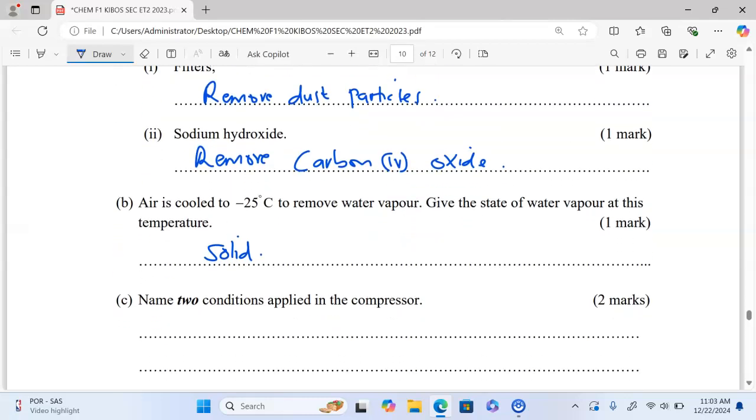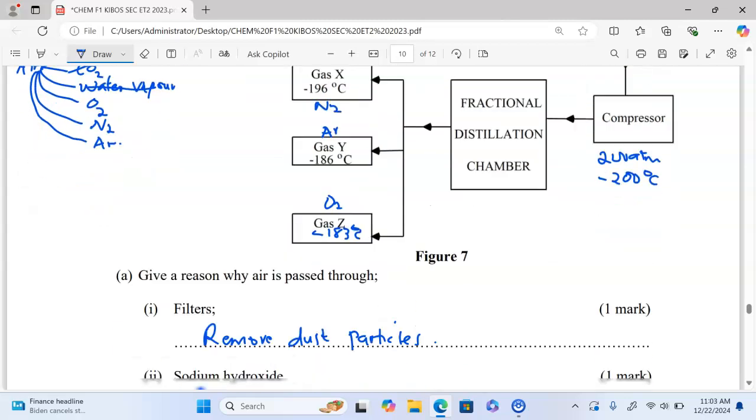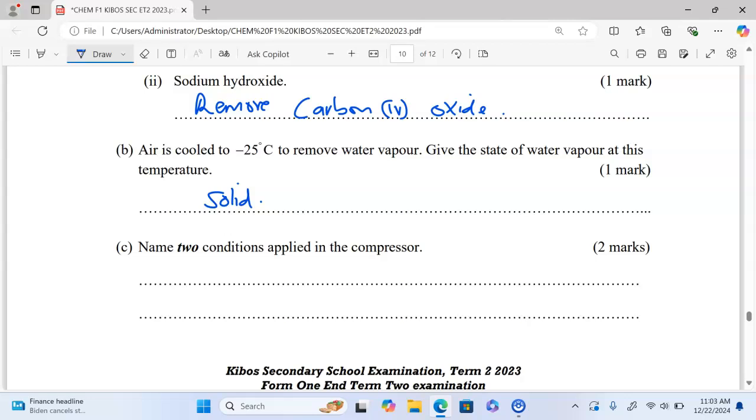Part C: Name two conditions applied in the compressor. If you look at the flowchart, the two conditions that must be applied at the compressor are a pressure of 200 atmospheres and also a temperature of negative 200 degrees Celsius.